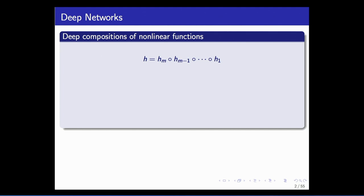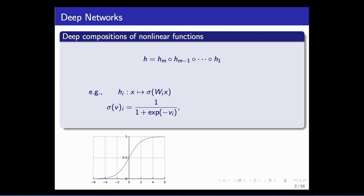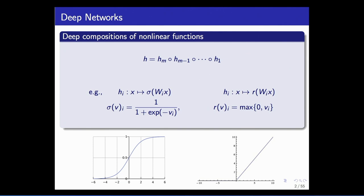These are mappings that take us from one vector space to another via a composition: from one vector, we map through a function h1 to another vector, through h2 to another vector, and so on. Thinking abstractly about these functions — not necessarily in a particular parametrized form — typically they're things like a component-wise nonlinearity applied to a linear function of the input vector. The component-wise nonlinearity might be a sigmoid function if you're old-fashioned, or a piecewise linear function like the ramp function if you're modern. The parameters that enter here are the W_i's, but we'll be thinking of the h_i's as elements of a generic family of vector-valued functions on a vector space.